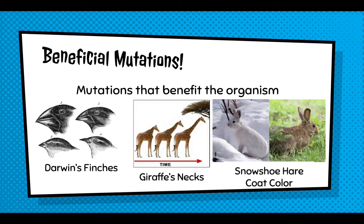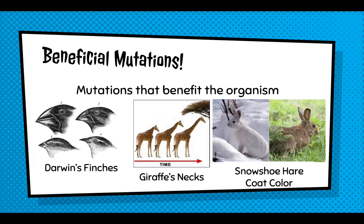The same thing applies to the snowshoe hare with coat color. In winter, snowshoe hares with darker coloring were eaten by predators and didn't make it to spring to reproduce. But the snowshoe hare that was all white was able to survive the winter by blending into the snow due to a mutation that made it white, and was able to reproduce in the spring. That mutation then took off in the population and the coat color completely changed. So mutations — you usually think it's a bad thing, but they really can have beneficial effects for a population in the long run.